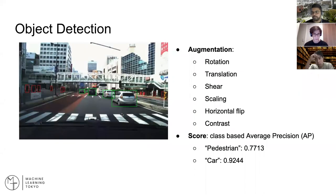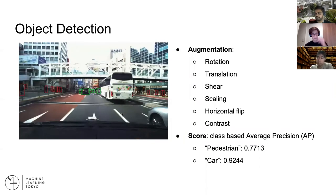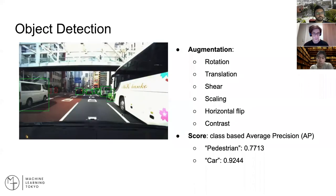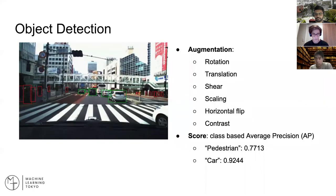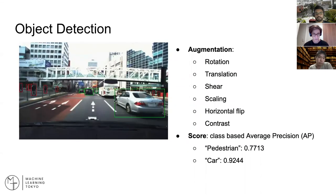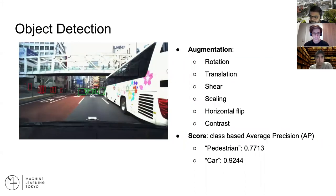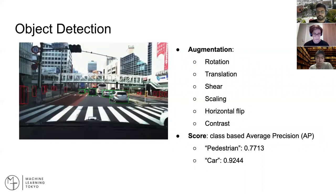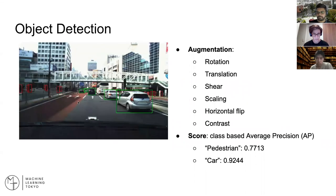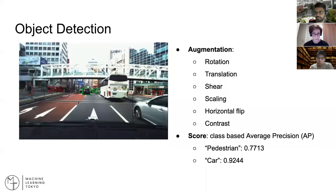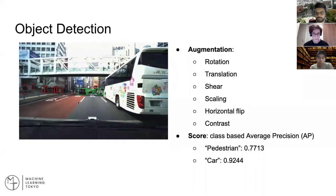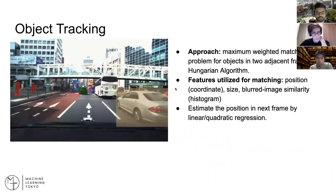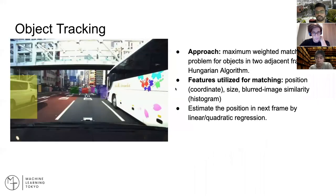For contrast augmentation, we performed it on the whole scene. On the question of whether we tried other methods like cutout or mix-up — we didn't try those approaches simply because we didn't have enough time, though we believe using mix-up and cutout would help. The effect of each type of augmentation was not individually evaluated. Now moving to object tracking — Kato-san will explain the algorithm used.